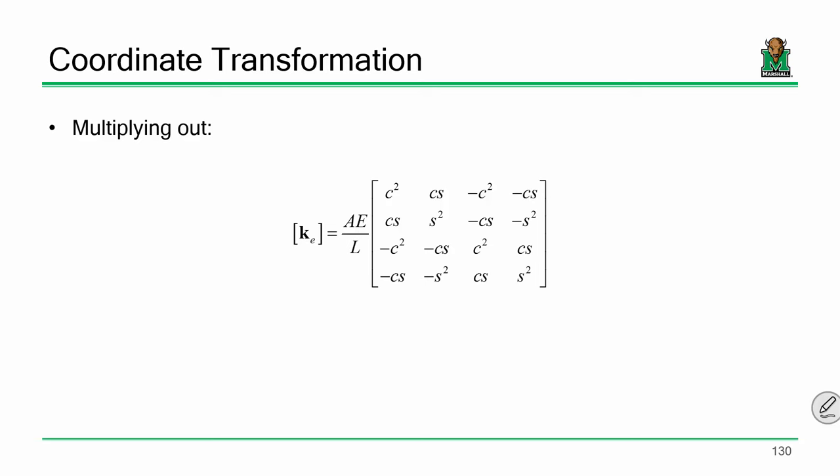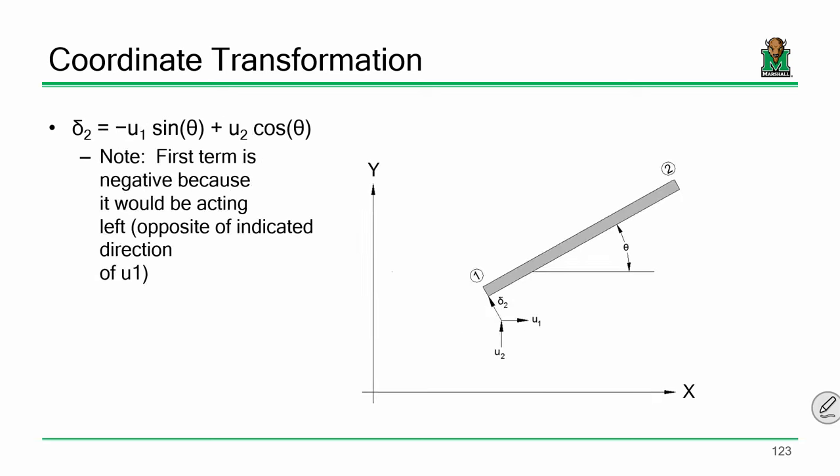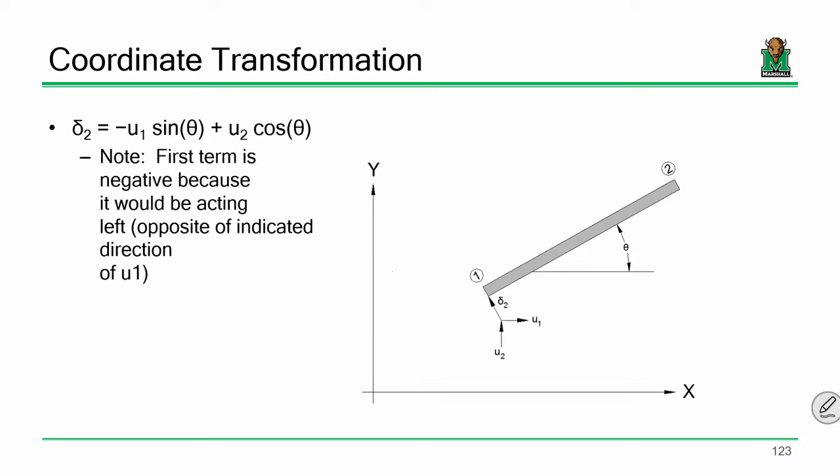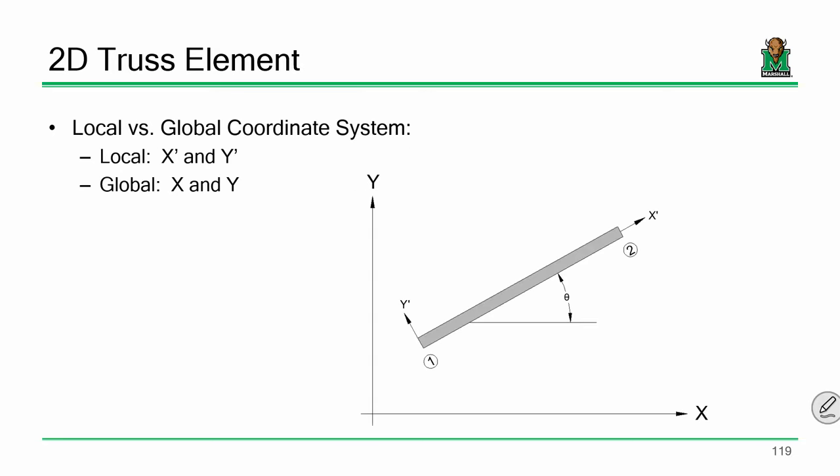Let me go back and explain why that's important. We've been talking about the difference between local and global coordinates. I propose the following question: what if they are oriented the same — what if the member is flat? Let's go through this exercise. What is theta if the member is oriented horizontally? Zero. What is the cosine of zero? One. What's the sine of zero? Zero.